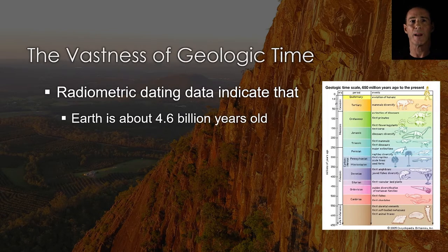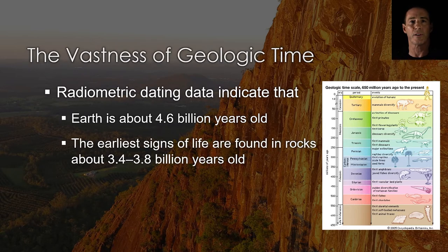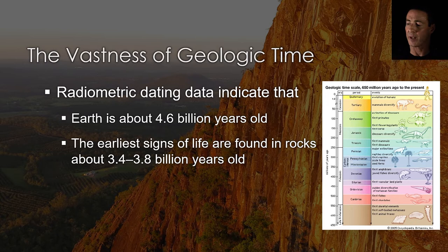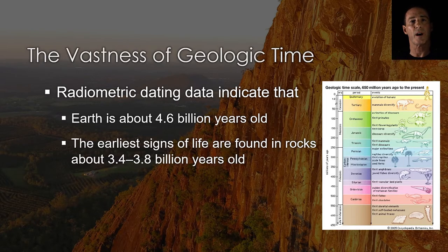According to data from radiometric dating, earth is about 4.6 billion years old, and the earliest signs of life appear in rocks that formed 3.4 to 3.8 billion years ago. Data from relative and absolute dating techniques agree: life on earth is ancient, congruent with the hypothesis that evolutionary change happens over timescales greater than human lifespans.